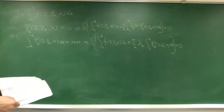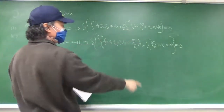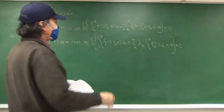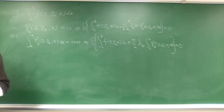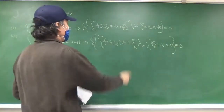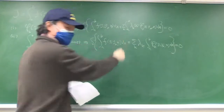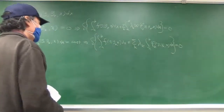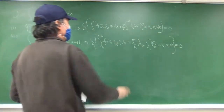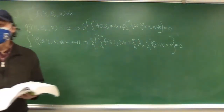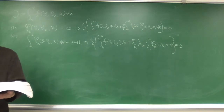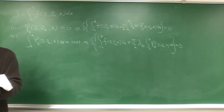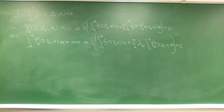Once you have put the Lagrange multiplier into your functional, the rest is just the unconstrained problem: write down the Euler-Lagrange equation based on the new functional with the Lagrange multiplier. After you solve that, you may or may not need to solve for the Lagrange multiplier depending on the situation.